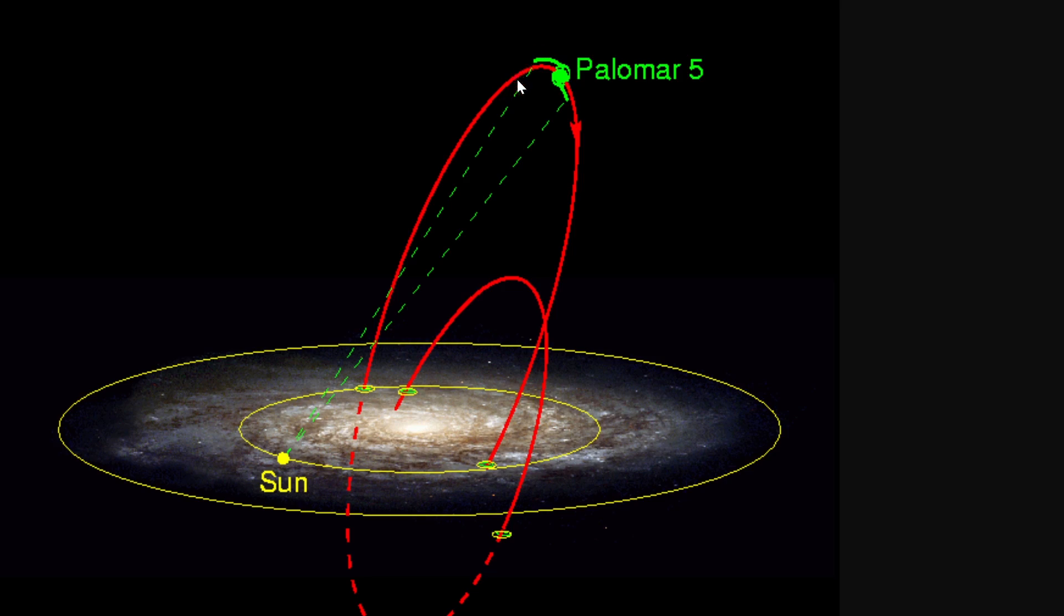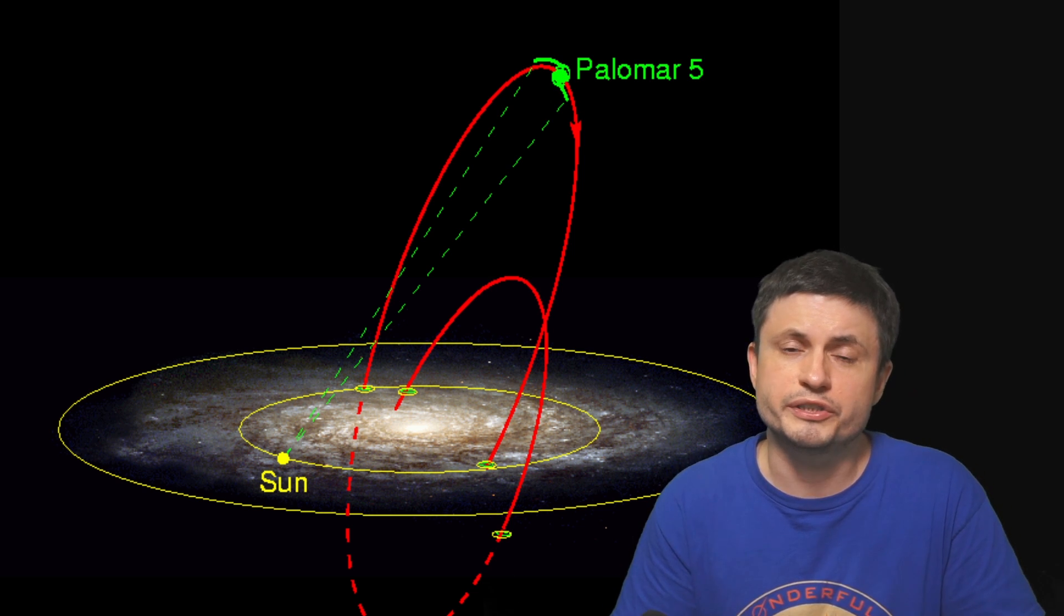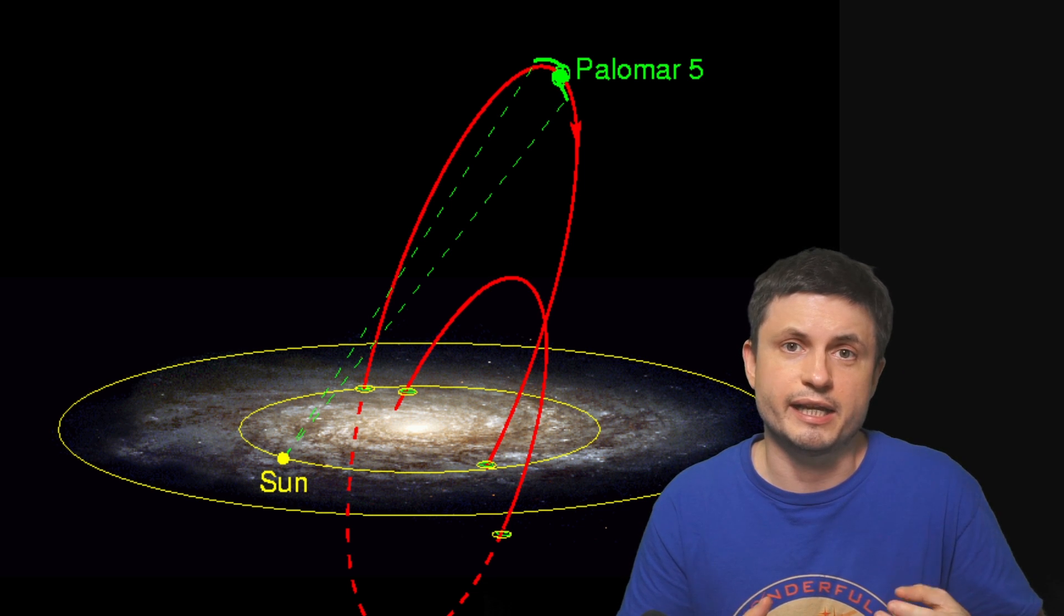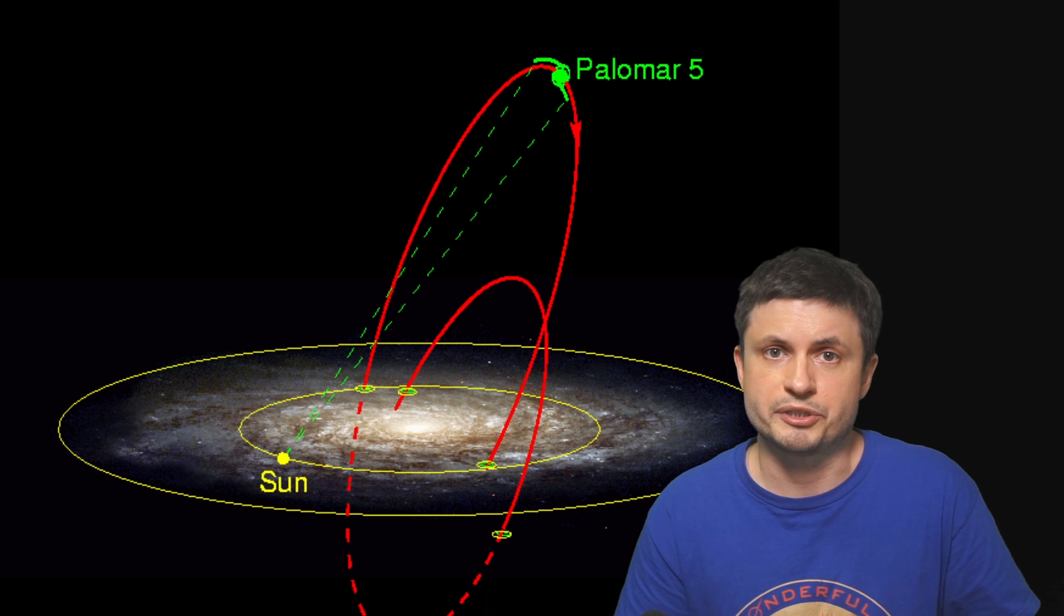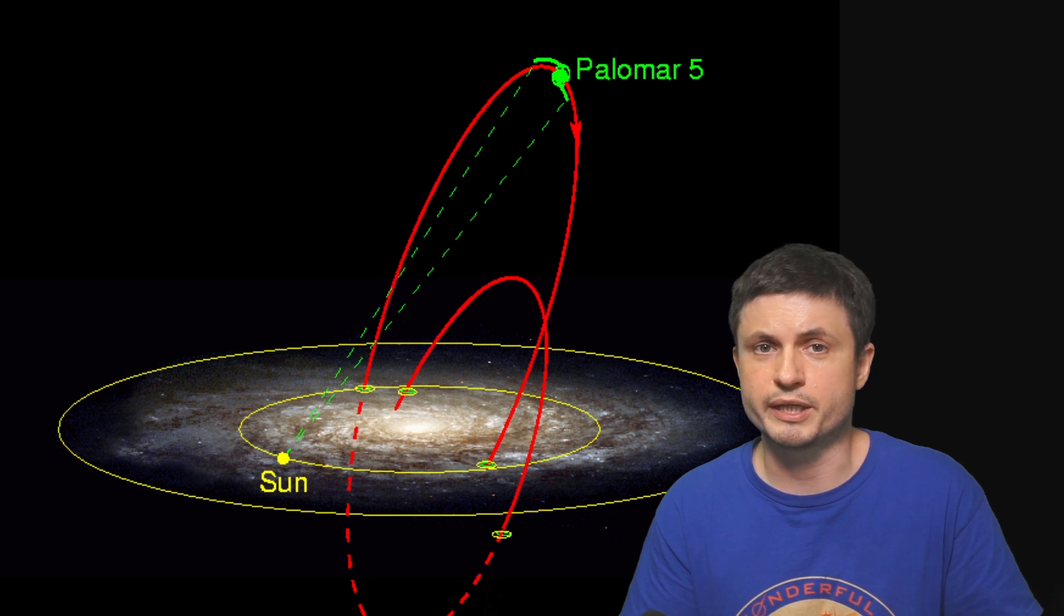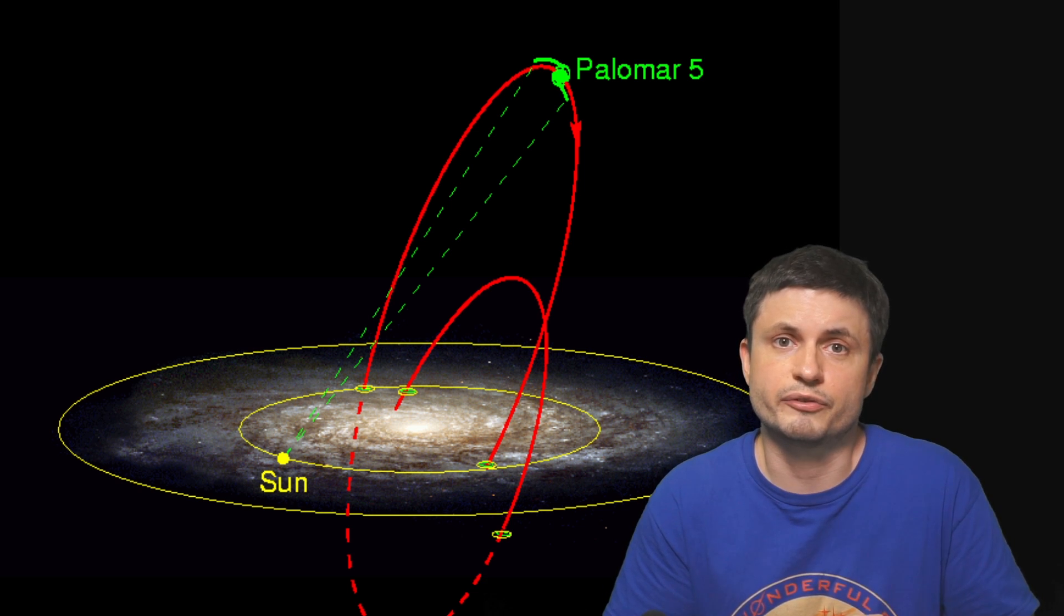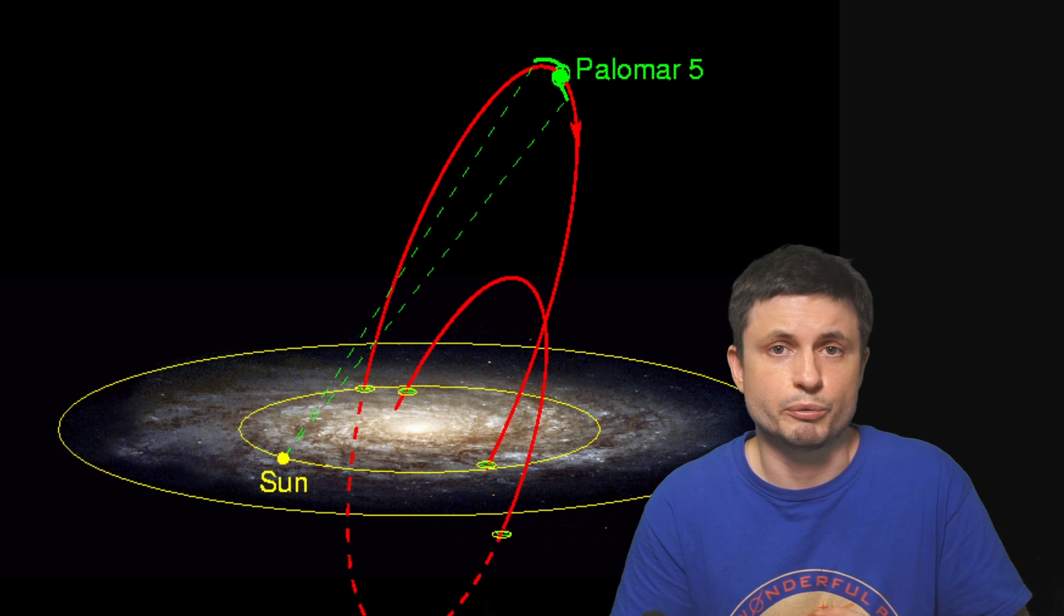Now the cluster itself is right here, about 60,000 light years away from the galactic center. But since it only recently started to become flattened and stretched by the gravitational forces, it implies that either A, it was captured relatively recently by the Milky Way, or B, it was in a very different orbit around the Milky Way galaxy.